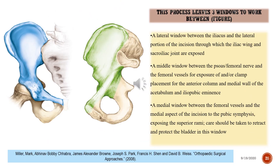This process leaves three windows to work between: a lateral window between the iliacus and the lateral portion of the incision through which the iliac wing and sacroiliac joint are exposed; a middle window between the psoas, femoral nerve, and the femoral vessels for exposure of and/or clamp placement for the anterior column and medial wall of the acetabulum and iliopubic eminence; and a medial window between the femoral vessels and the medial aspect of the incision to the pubic symphysis, exposing the superior rami — care should be taken to retract and protect the bladder in this window.